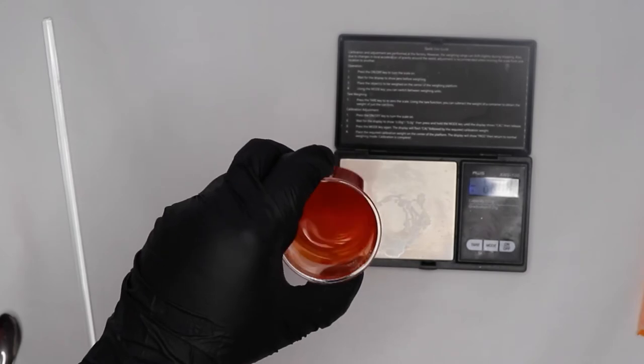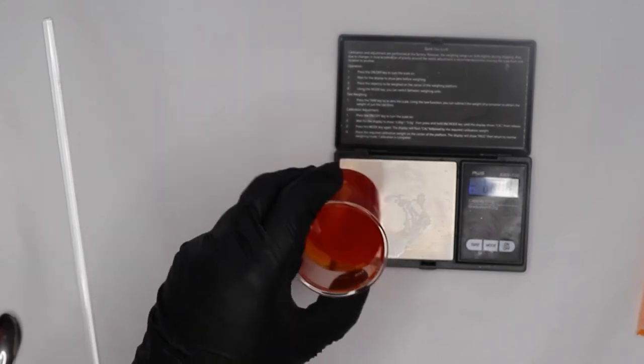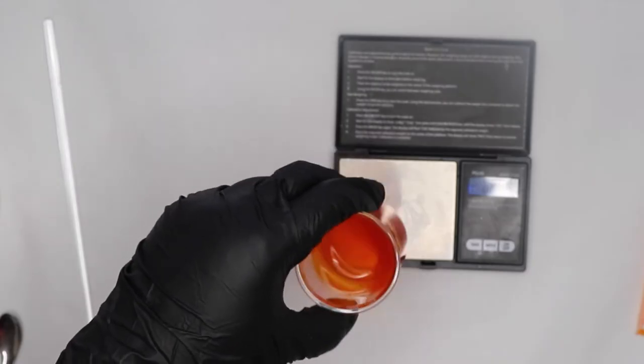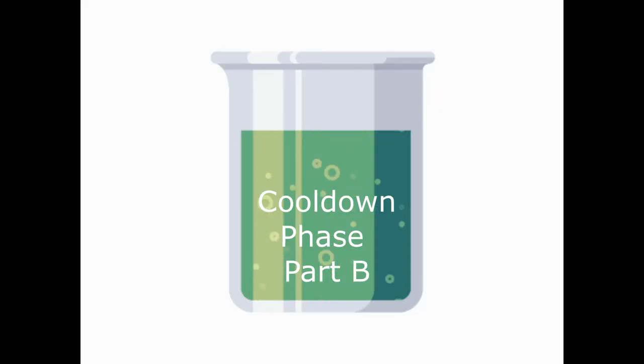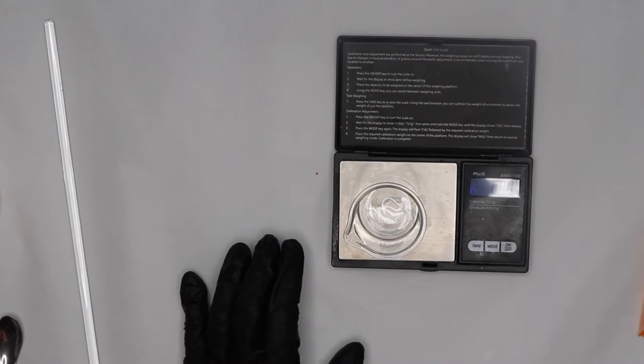So I am just going to agitate it around just a little bit and mix it in. Beautiful orange. Lots of vitamins in here. Okay, so we are going to put this aside. And now this is our part B of the cool down phase.